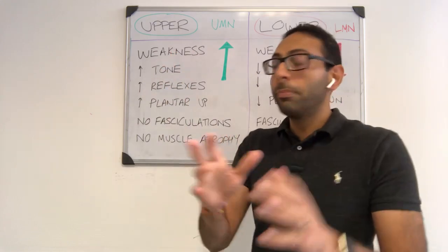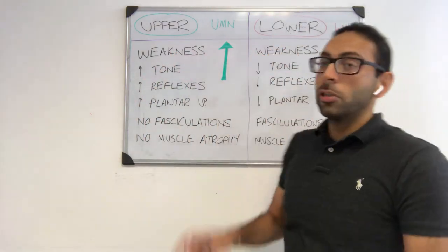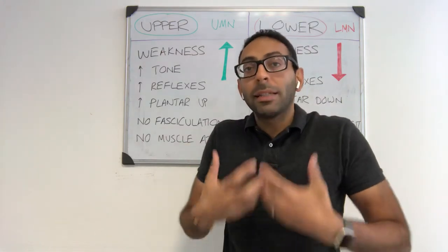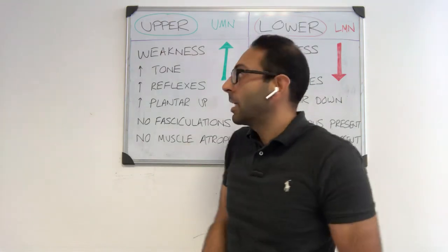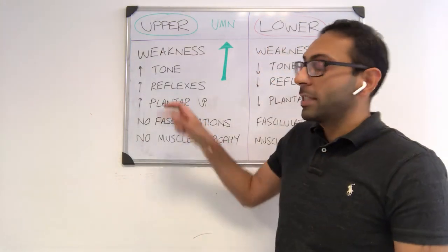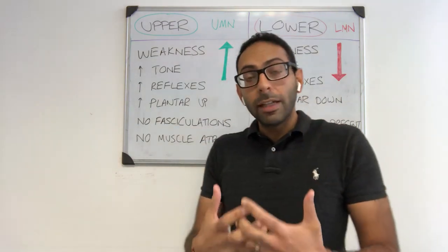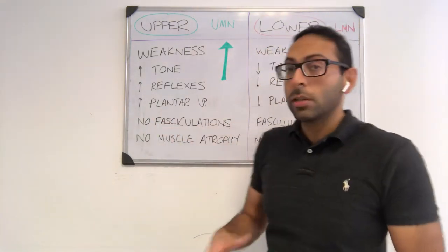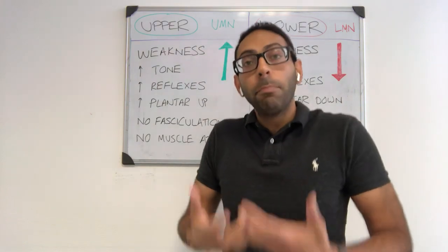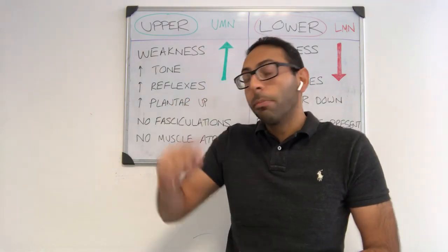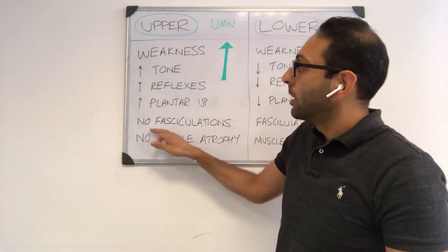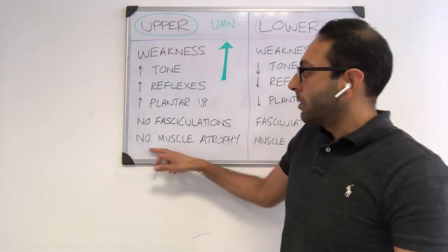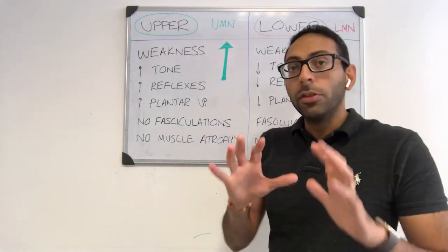With upper motor neurone lesions, you get weakness — weakness is present in both upper and lower motor neurone lesions. You get increased tone, so high levels of tone; spasticity can often present. Your reflexes go up, so you have brisk reflexes. Your plantar response goes up — the Babinski response is positive, so your toe goes up when you test the plantar reflex. There are no fasciculations and no muscle atrophy usually.